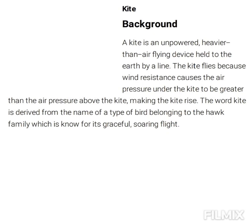The first step in the quality control of kite manufacturing is inspection of the nylon fabric. It must be free from holes and tears, which would damage the ability of the kite to stay aloft. After it is cut, the fabric is inspected to ensure that all pieces have been cut to the proper size and shape.